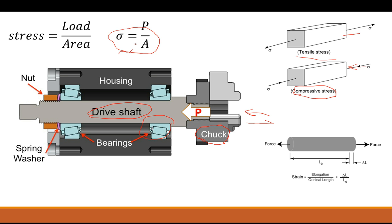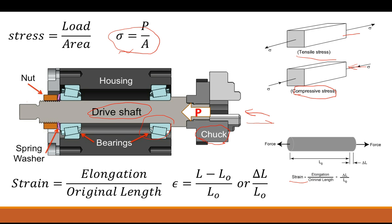You're also creating a strain — meaning that on a very small level the length of the drive shaft is being distorted. Strain is the change in length over the original length, and here that equation is written out mathematically. So these are the things that actually take place if you have any kind of load on a material member: you apply a load and develop a stress and a strain. Stress is the internal resistance to that load, and strain is the change in length versus the original length.